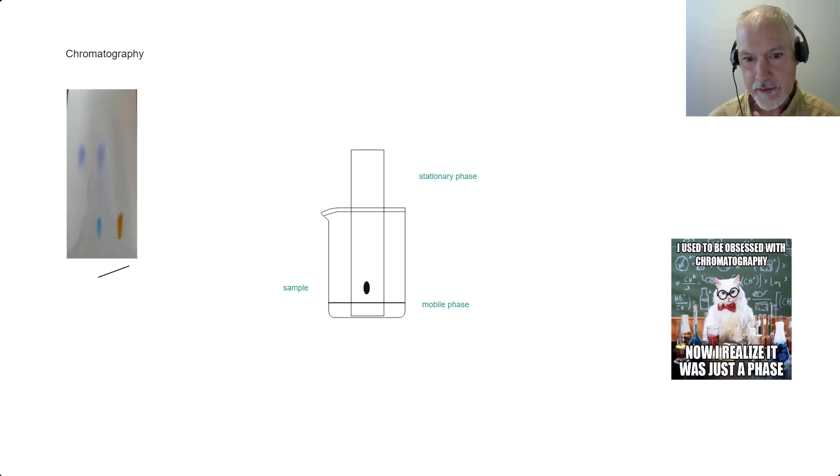Now, let's take a look at some of the theory that lies behind it. We begin with what we call the stationary phase. The stationary phase, perhaps in this experiment, was paper and it's a commonly used material. Another material that can be used is silica or alumina gel.